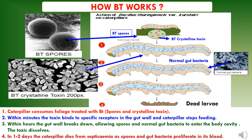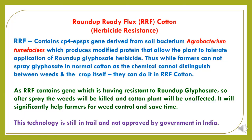The diagram represents how Bt works. In the first step, a caterpillar consumes foliage treated with Bt spores and crystalline toxin. In the second step, within minutes the toxin binds to specific receptors in the gut wall and the caterpillar stops feeding. In the third step, within hours the gut wall breaks down allowing spores and normal gut bacteria to enter the body cavity and the toxin dissolves throughout the body. In the fourth step, in one to two days the caterpillar dies from septicemia as spores and gut bacteria proliferate in its blood.